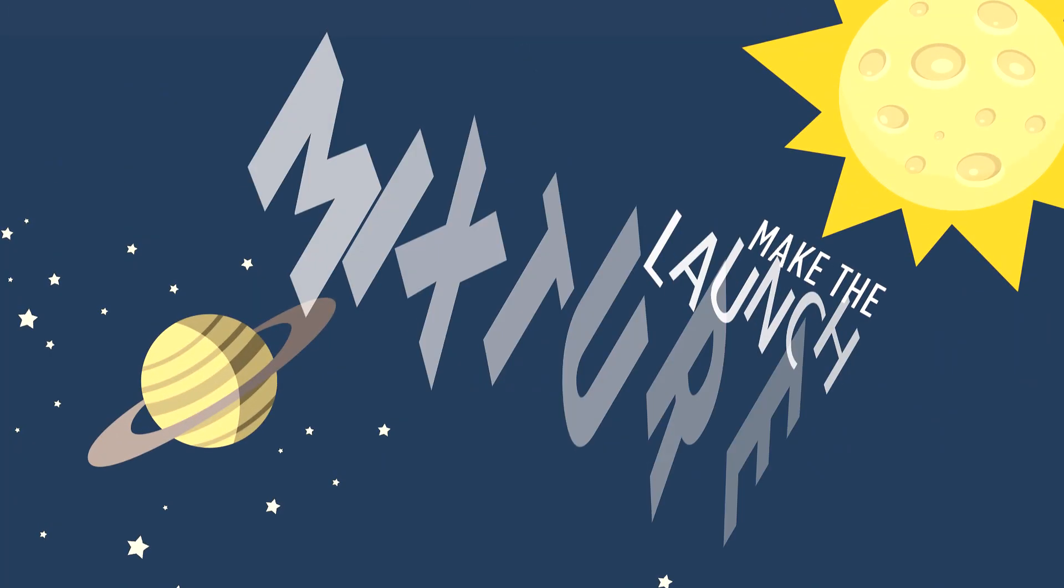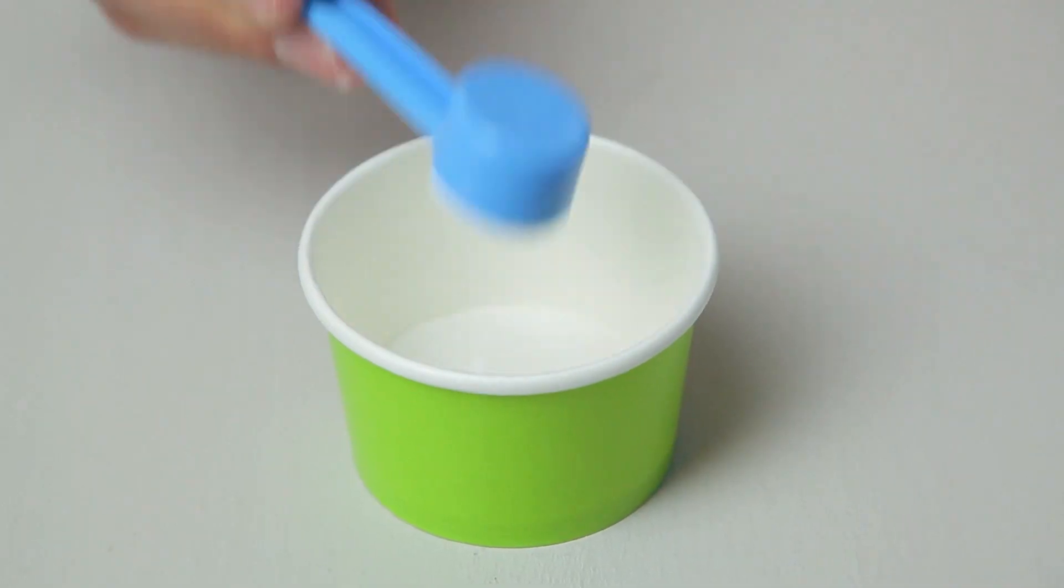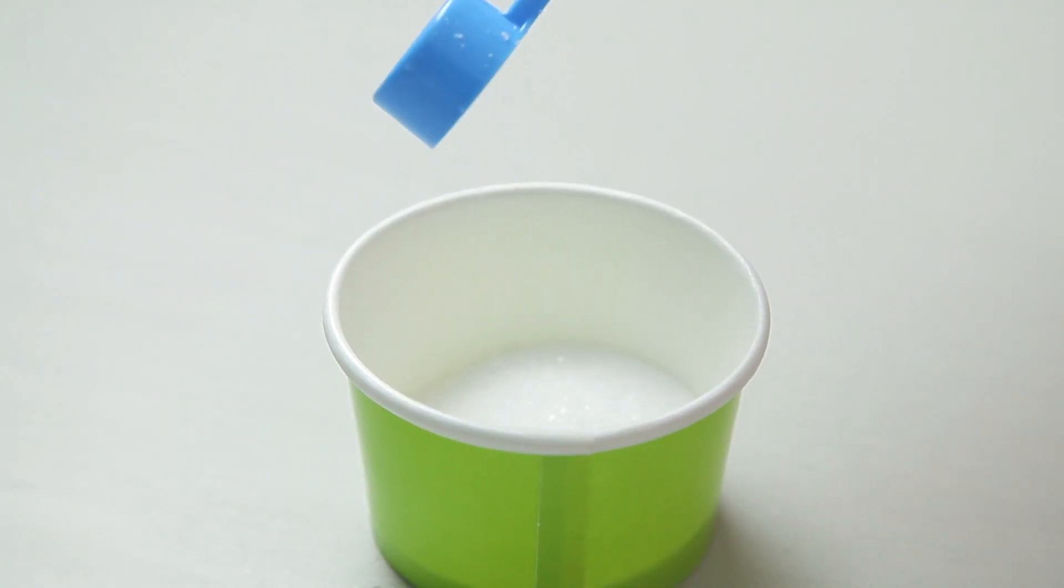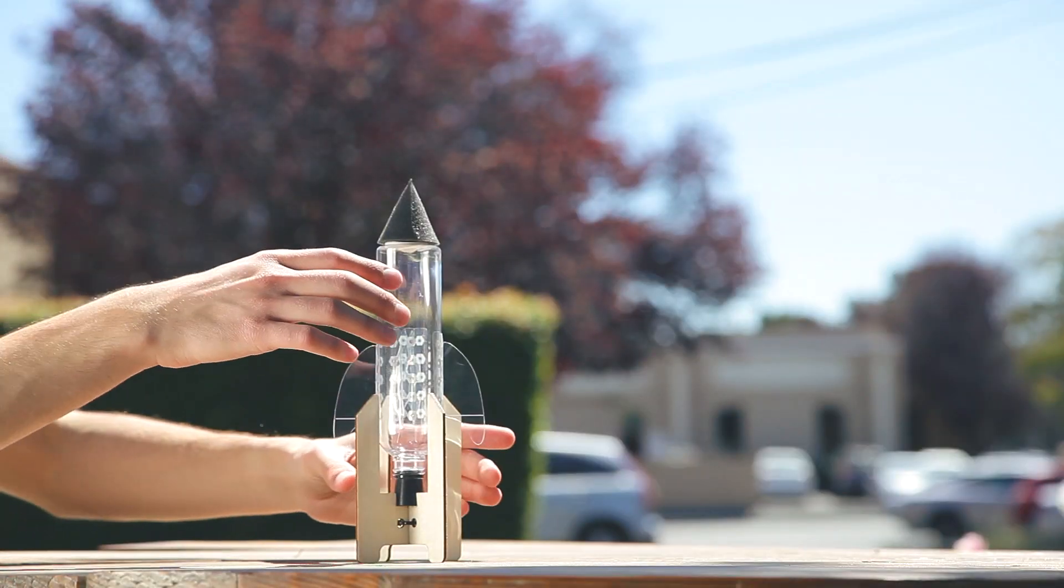Last, let's make our launch mixture. Add two scoops of baking soda and two scoops of citric acid into your paper cup. Stir the powders until they're completely mixed. Make sure to head outside to launch your rocket and be ready because the next four steps happen quickly.